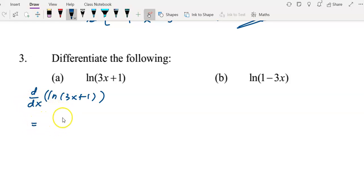To differentiate this function, we'll use the formula g'(x)/g(x), meaning we differentiate 3x+1 to get 3, then divide by 3x+1. So the answer is 3/(3x+1).